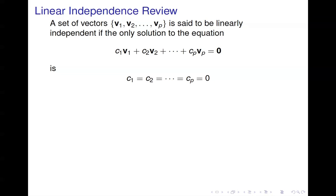Before we get into that, let's back up and remember a couple of key concepts. One is linear independence and the other is spanning. Let's start with linear independence. Here's the definition: a set of vectors v1 through vp is said to be linearly independent if the only solution...